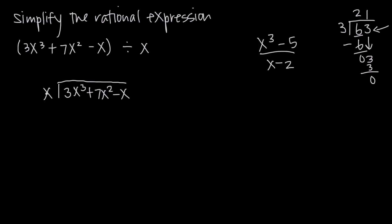In other words, what do we have to multiply by x to get 3x cubed? We know we need to multiply by 3 to get the coefficient, and x squared times x is x cubed, so the answer is 3x squared. We multiply 3x squared by x and get 3x cubed, write that underneath, and subtract. 3x cubed minus 3x cubed is 0. We bring down 7x squared, giving us 0 plus 7x squared.